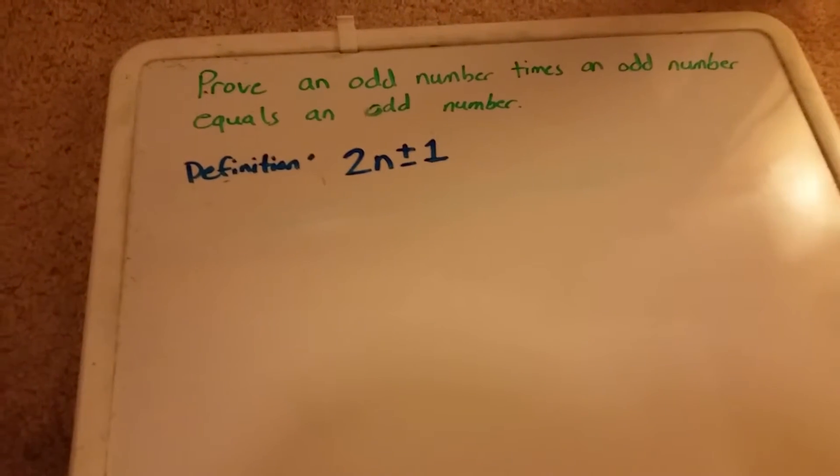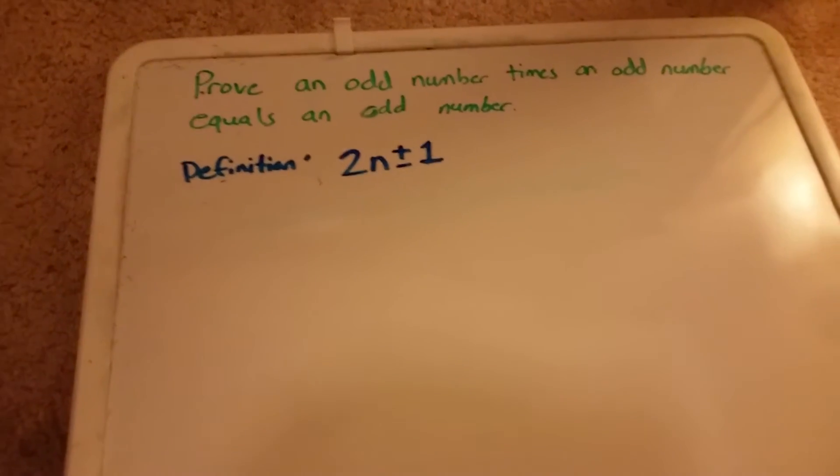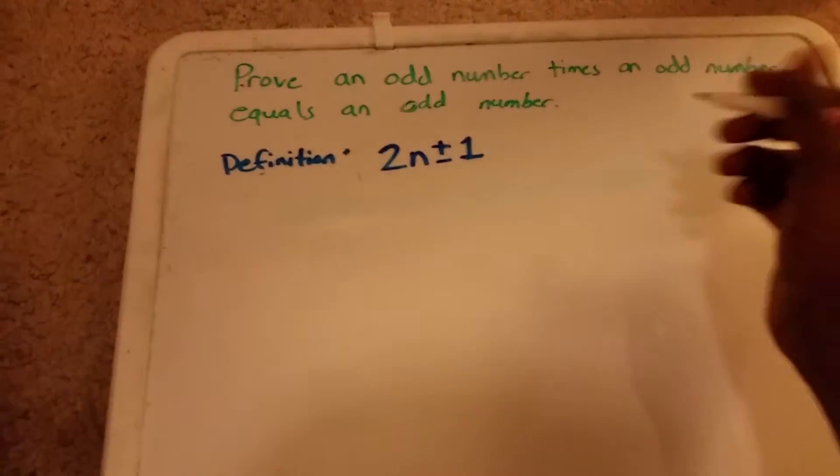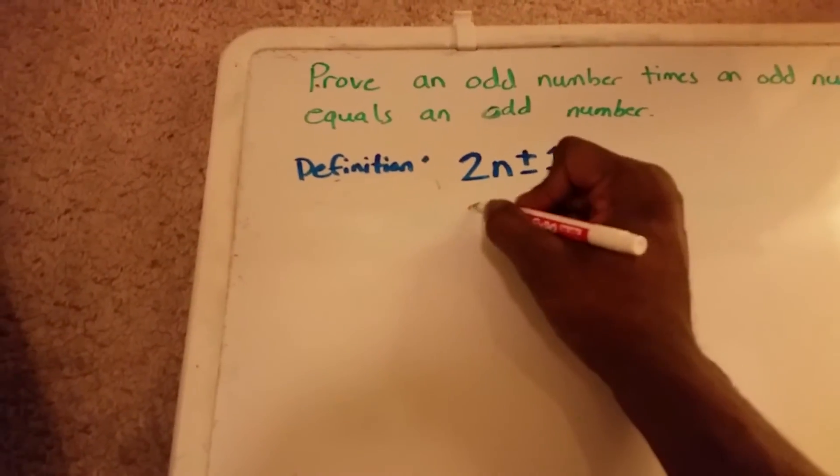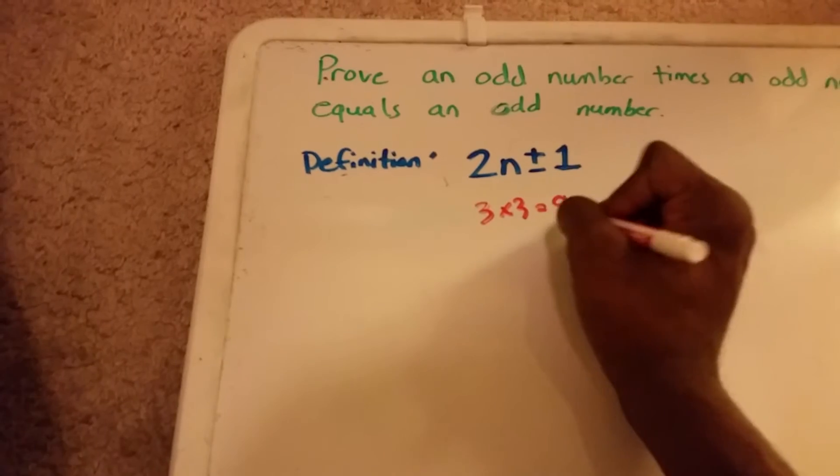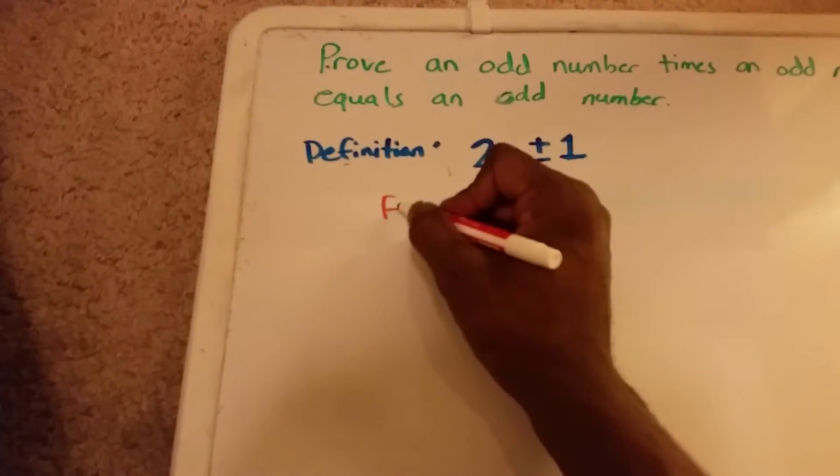Hello YouTube. This is a proof that an odd number times an odd number equals an odd number. So we have numbers like 3 times 3 equals 9. These are examples.